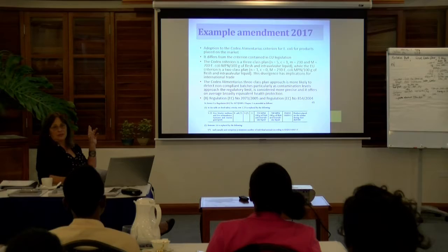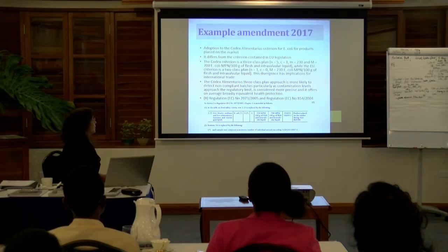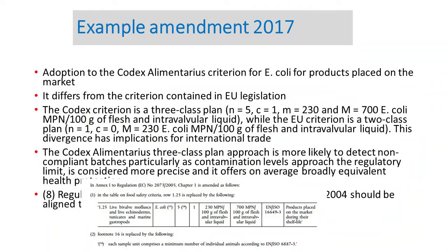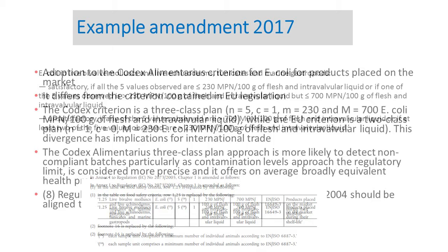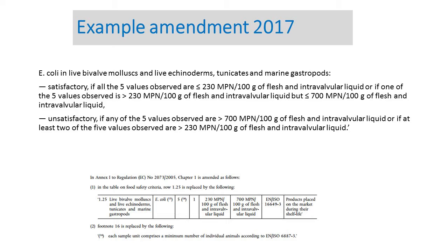From next year onwards, the criterion for E. coli will apply for live bivalve molluscs. This is an amendment to the legislation — it's two pages where they explain more or less what has been changed. The amendments are not always easy to find on the internet because they have a different number. They changed the sampling plan and set an upper and lower limit, and this comes from Codex.